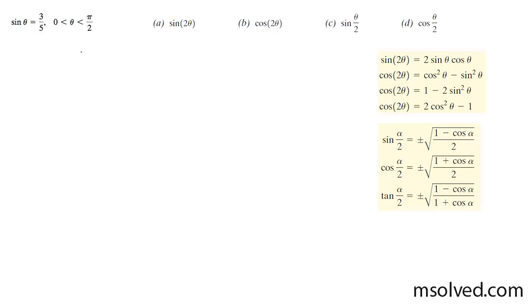Based off of the given information, we know that the sine of theta is 3 fifths. So the opposite side is going to be 3 and the hypotenuse is going to be 5, which means the adjacent side is the square root of 5 squared minus 3 squared, which is the square root of 16, so that's 4. So the cosine of theta is going to be equal to 4 over 5.